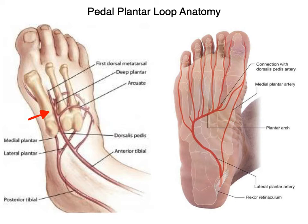Conceptually, this is what it looks like. The anterior tibial artery continues across the ankle joint as the dorsalis pedis artery. It then gives a branch between the base of the first and second metatarsal bones called the deep plantar artery or deep perforating artery, which courses laterally and eventually anastomoses with the lateral plantar artery.